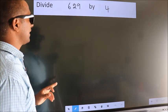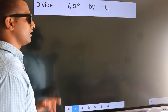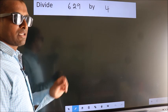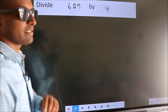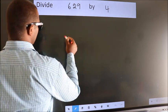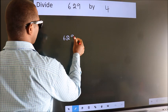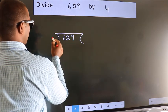Divide 629 by 4. To do this division, we should frame it in this way. 629 here, 4 here.